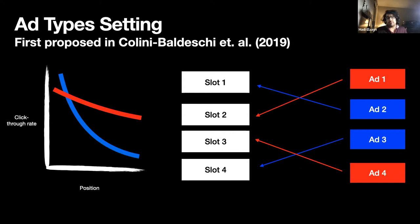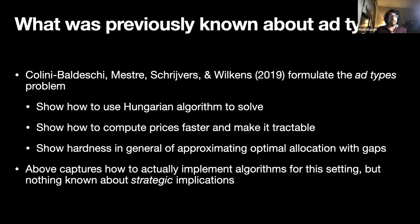We'd like some sort of model that relaxes this separability assumption, but without giving up too much on structure. So we want some sort of intermediate model. The ad type setting proposed by Kalina-Moleski et al. previously is a really nice intermediate model. Instead of saying ads completely disagree on the values of slots, we say that ads are in different types. For example, the click-through rates for red ads decline pretty slowly over position, whereas the click-through rates for blue ads decline really steeply. Really nothing was known about the strategic implications of this setting, and that's the goal of this work.